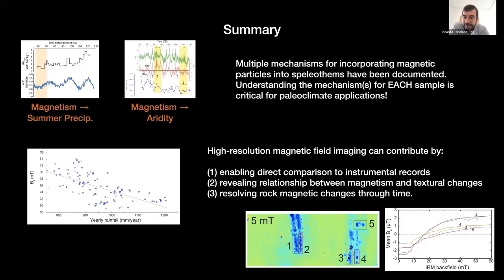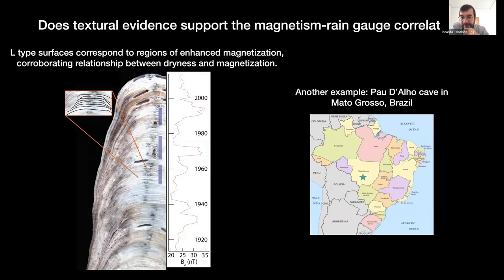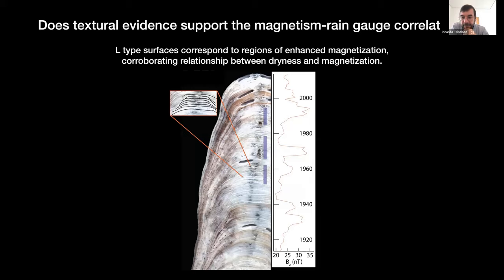Thanks a lot Roger for the very nice talk and results. Does anyone have a question? I'd like to ask about coupling the micro-stratigraphy with the magnetic measurements. Do you think it's possible to do that at the scale of the whole speleothem? The big problem with the QDM is getting results from what we'd call large scale — a centimeter scale speleothem.